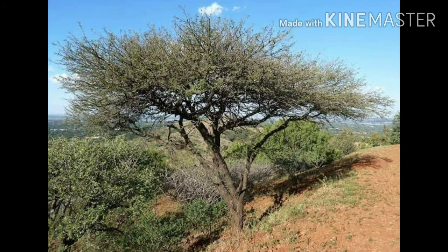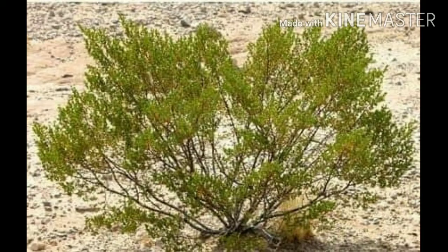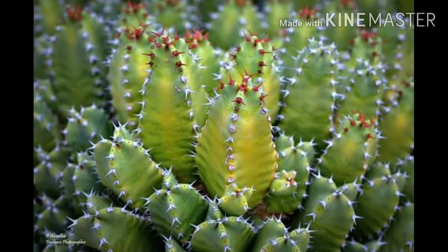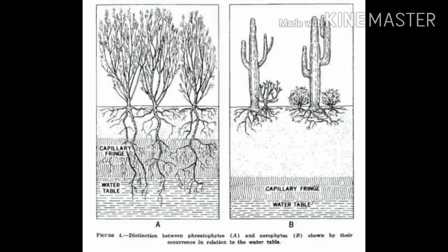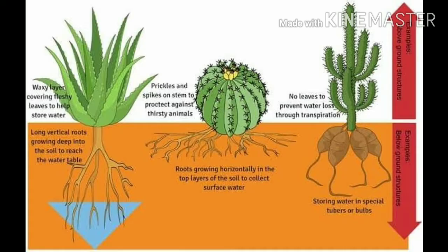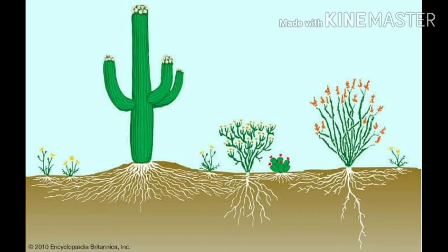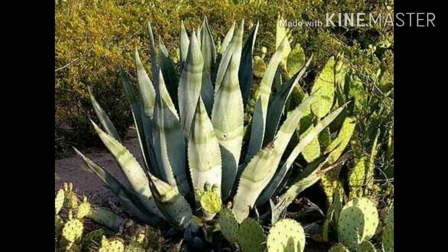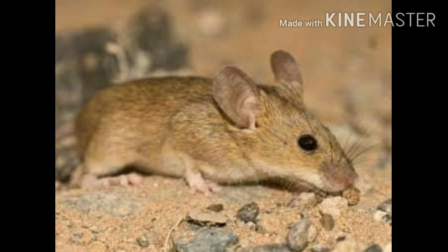The scattered trees of this type of forest possess long penetrating roots that reach deep into the soil to get moisture. These roots tend to spread out in a radial pattern to reach for water. The leaves of these trees are thick and tiny in order to have minimum evaporation. The common animals are Rats,